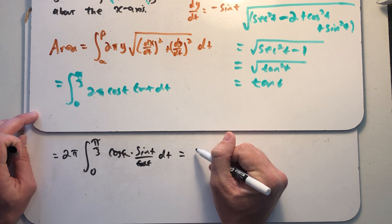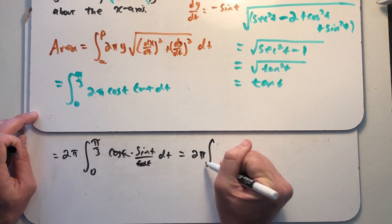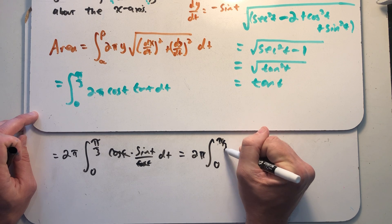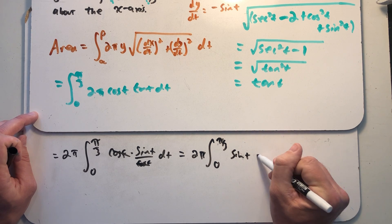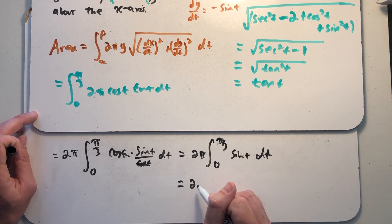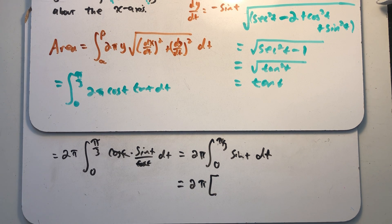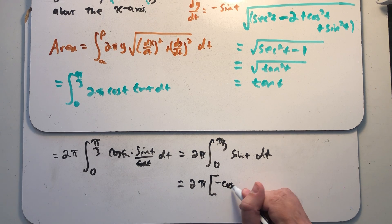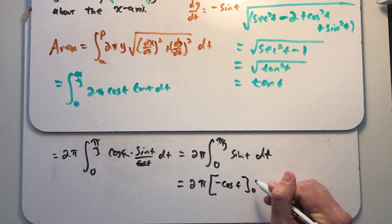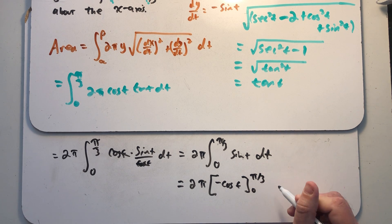So this is really just an integral, two pi times the integral from zero to pi thirds of sine. So this is a problem that was created by someone to look challenging, but after we get everything settled, it's not all that bad. So let's see, antiderivative of sine is minus cosine. We need to evaluate from zero to pi over three.